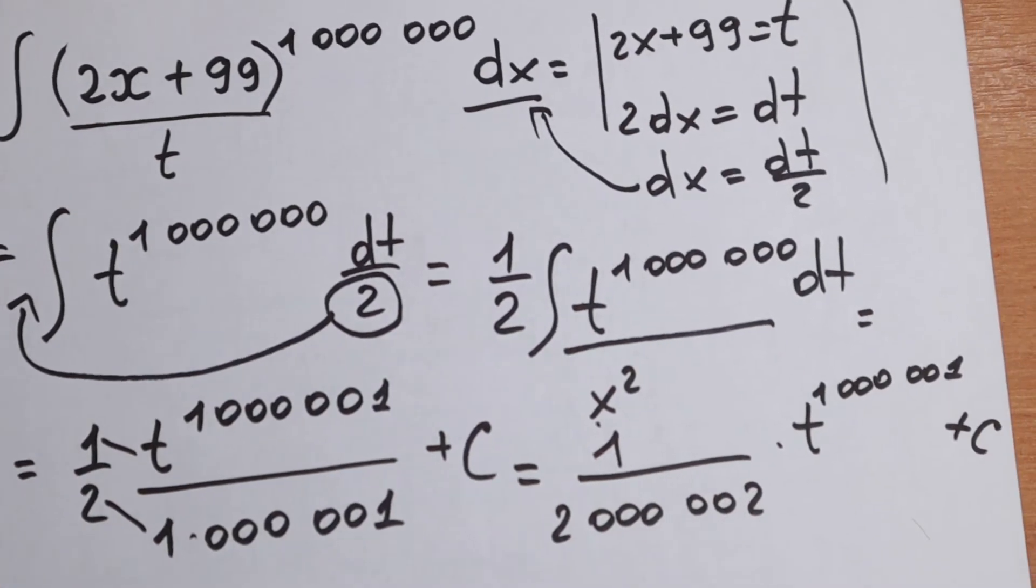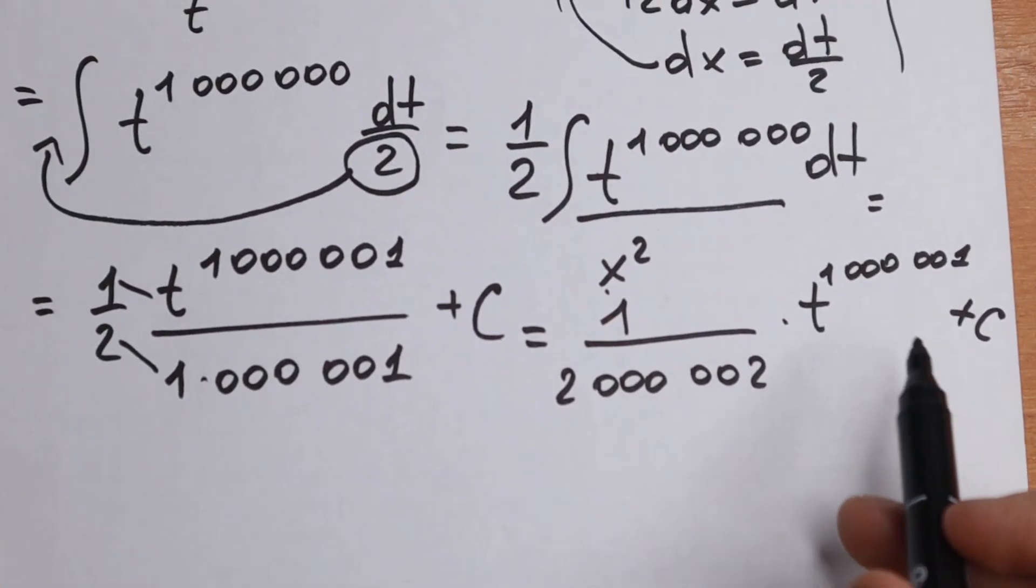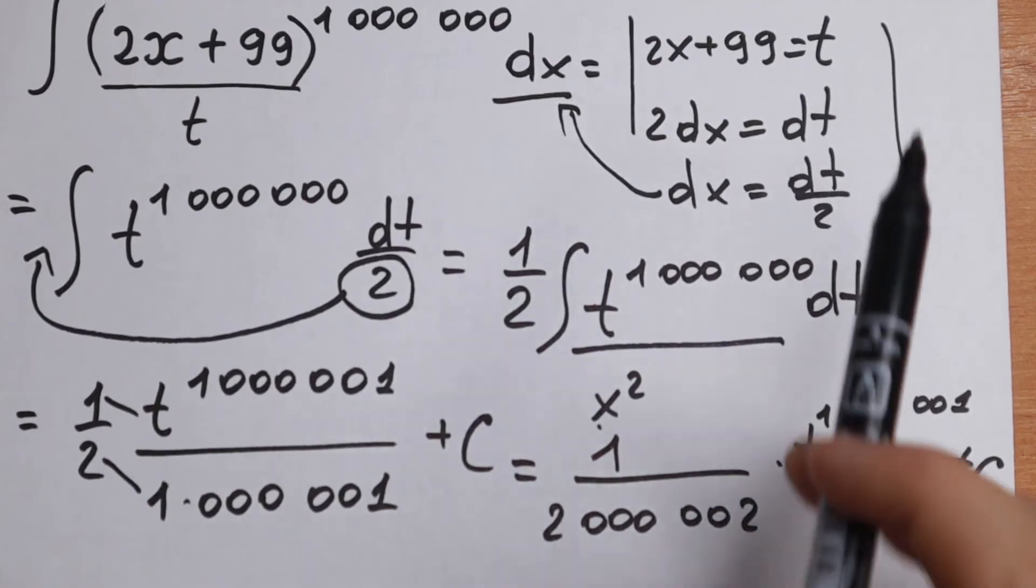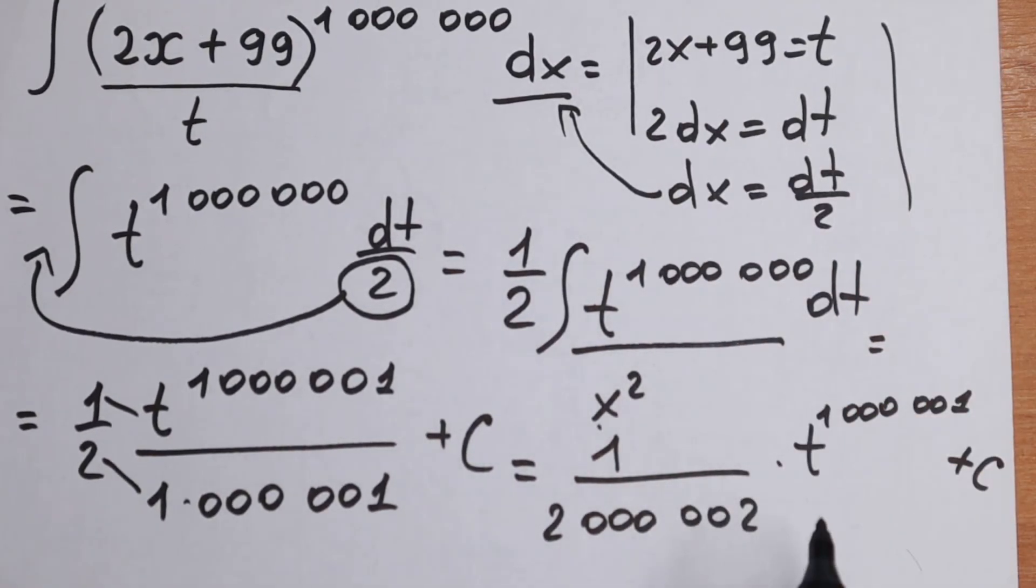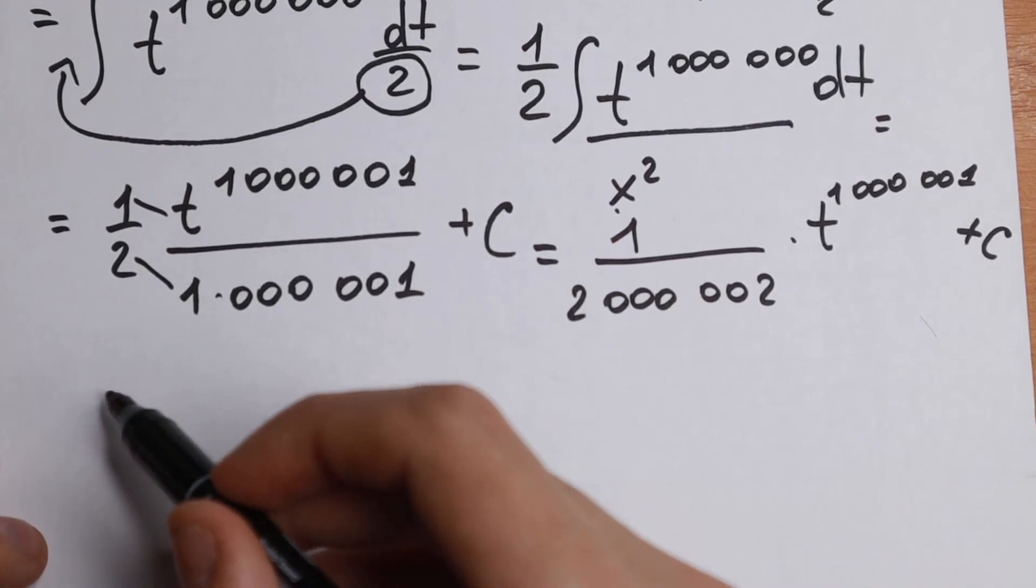So this is our integral using t. We need to go to our substitution. 2x + 99 is our t, and we need to change it. This will be our last step.